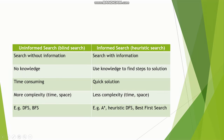Some examples of uninformed search are DFS (depth-first search) and breadth-first search. For informed search, we have A-star, heuristic DFS, and best-first search. Thank you.